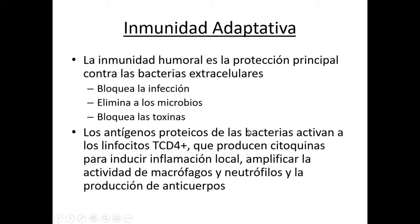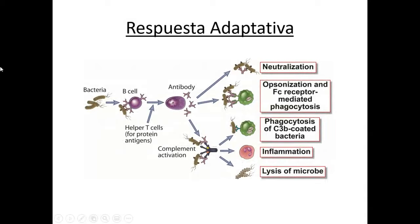La respuesta inmune mediada por linfocitos TCD4, contra los gérmenes extracelulares, va a ser organizada mediante la liberación de citoquinas, lo que va a permitir que los gérmenes sean removidos de manera eficiente. La respuesta adaptativa principal es la formación de anticuerpos. El anticuerpo se va a formar por colaboración, si se trata de IgE, IgA o IgG, con el linfocito T helper. La función principal es la neutralización y la opsonización para facilitar la fagocitosis, y la tercera función es la activación del complemento, que también opsoniza y facilita la fagocitosis.